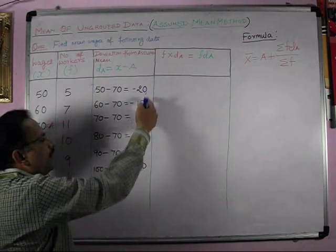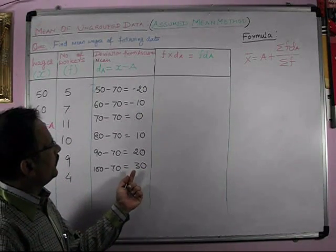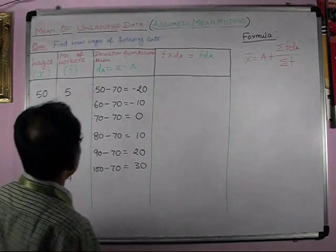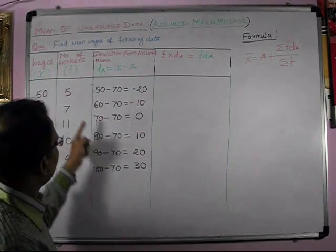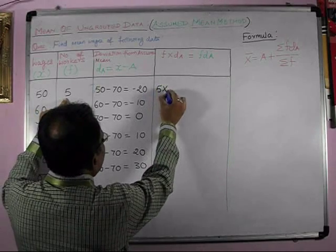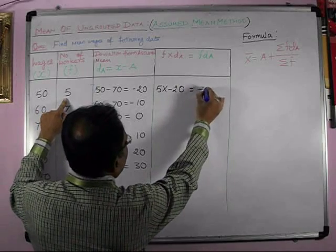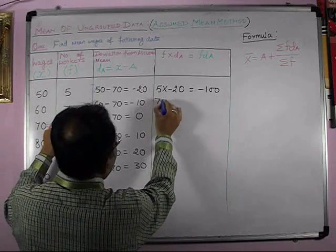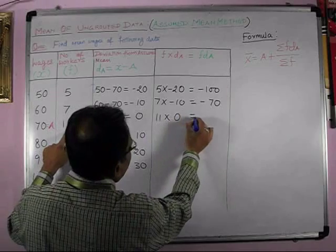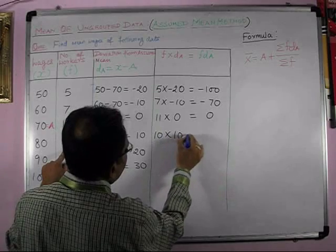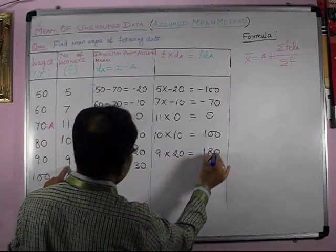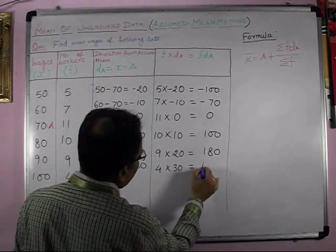These values are the deviation from assumed mean. Now, what we have to do? We have to find out F into DA. F is here, and DA is here. So, we have to multiply these both. 5 into minus 20 is equal to minus 100. 7 into minus 10 is equal to minus 70. 11 into 0 is equal to 0. 10 into 10 is equal to 100. 9 into 20 is equal to 180. And 4 into 30 is equal to 120.